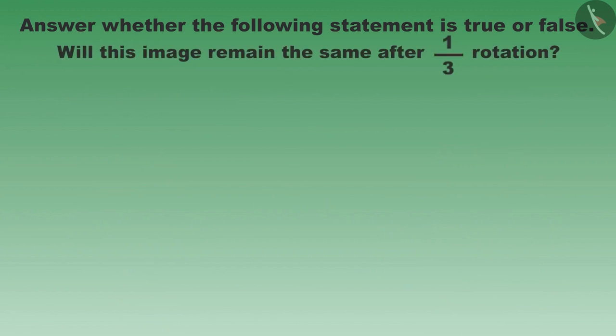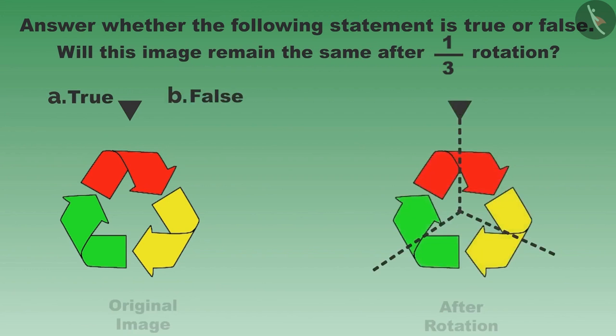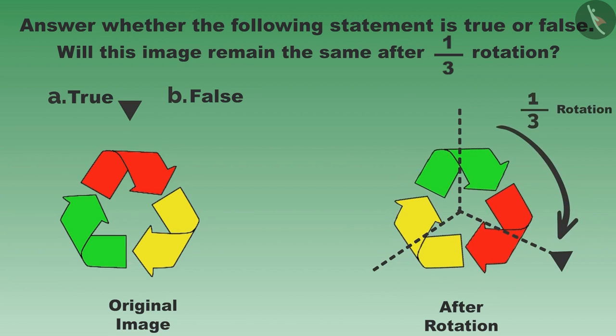Will this image too remain the same after one-third rotation? Let us rotate it by one-third and see for ourselves. This image does not match the earlier one. Since this image is colorful, we have to focus on the order of the colors also. All these parts have different colors. Thus, this is a false statement.